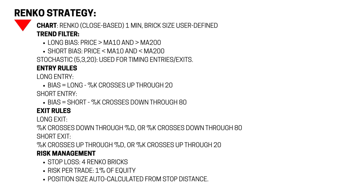Here are the formal rules of the strategy. It's Renko-based on one-minute closes with a user-defined brick size. Trend filter for long bias: moving average 10 greater than moving average 200, and vice versa for short. Stochastic settings: 5-3-20, but remember we can change all of that. Long entry: %K crosses up through 20 with the moving average filter aligned. Short entry: the opposite. Exit rules: %K crosses down through %D, or %K crosses down through 80 — whichever comes first. Risk management: stop loss set in Renko bricks, risk per trade 1% of equity, position size auto-calculated from stop distance.